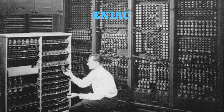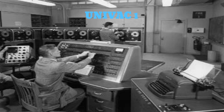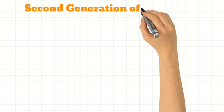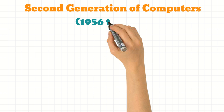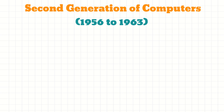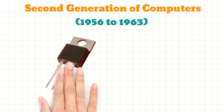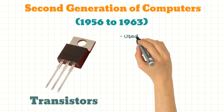Examples include ENIAC, EDVAC and UNIVAC-1. The second generation of computers came between the years 1956 to 1963 when transistors replaced the vacuum tubes.